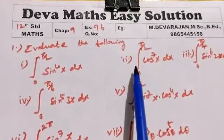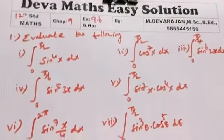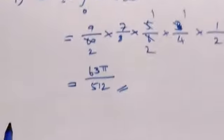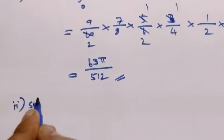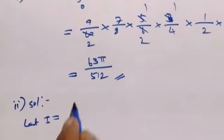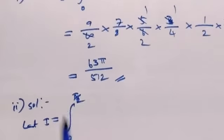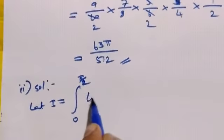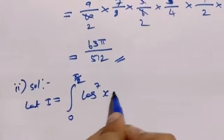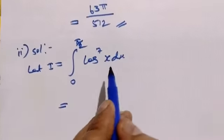The integral, limit 0 to π/2, of cos power 7x dx. Applying the reduction formula, the power n is 6. The given sum is the integral from 0 to π/2 of cos power 7x dx, with power n equal to 6.